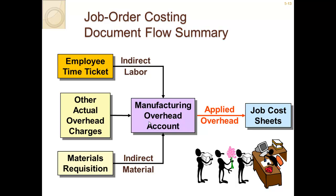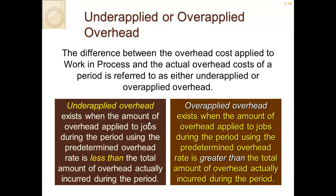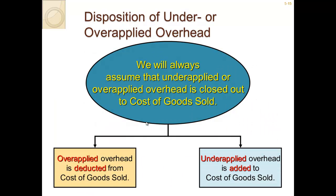When overhead is applied to job costs, remember we used a predetermined rate, so we may be over, correct, or under. The difference between overhead cost applied in work-in-process and the actual overhead for the period is referred to as either under-applied or over-applied overhead. Under-applied means actual costs were more than we guessed, and we must add more cost. Over-applied means we applied more overhead than actual costs, so we reduce the cost applied to the project. Over-applied overhead is deducted from cost of goods sold; under-applied overhead is added to cost of goods sold.